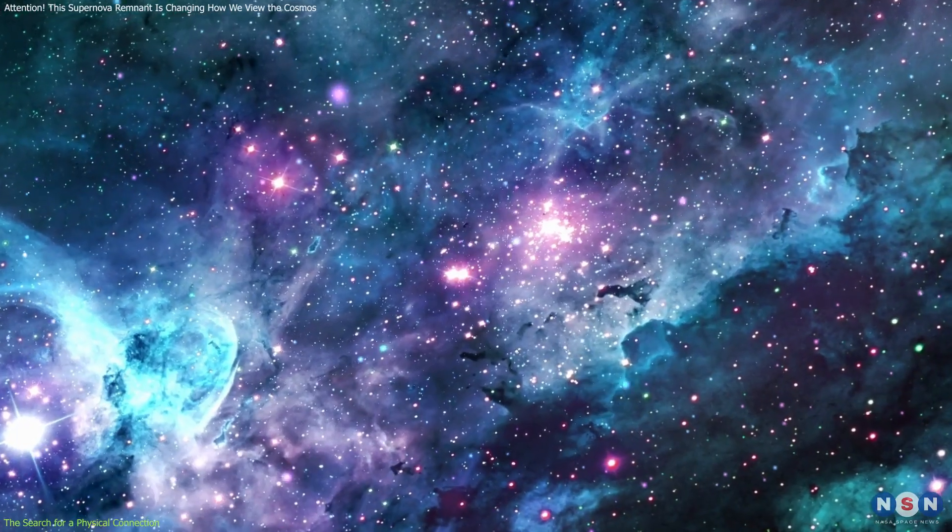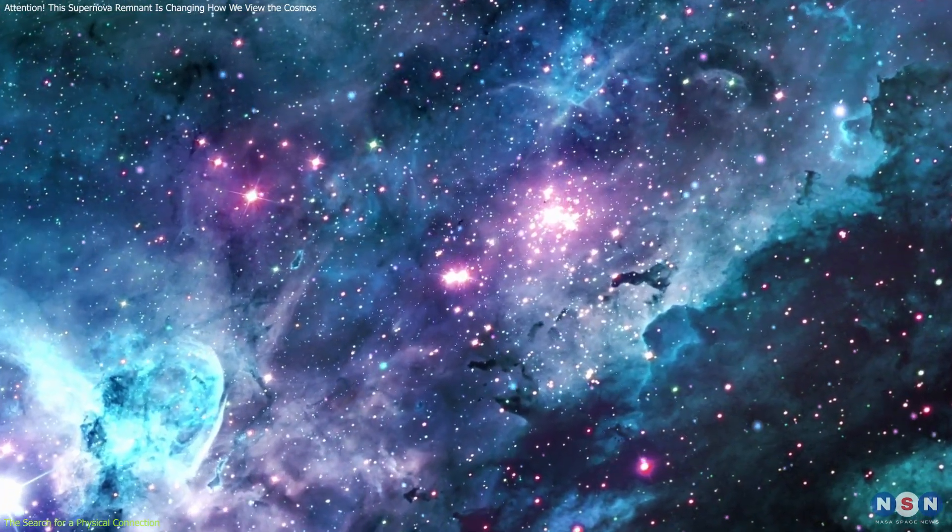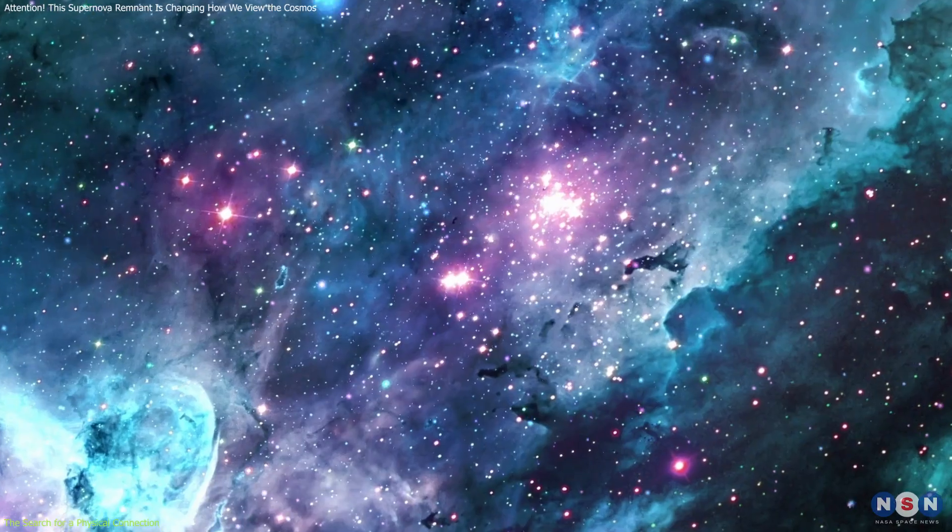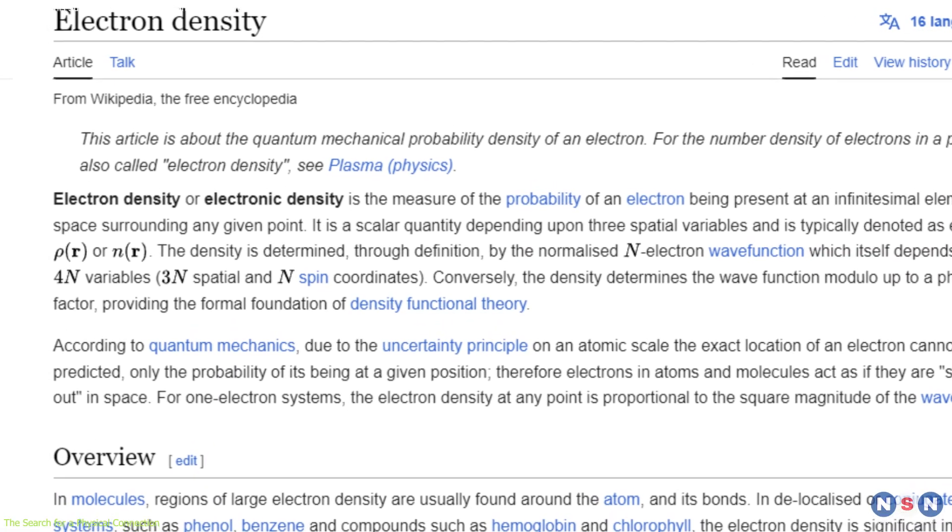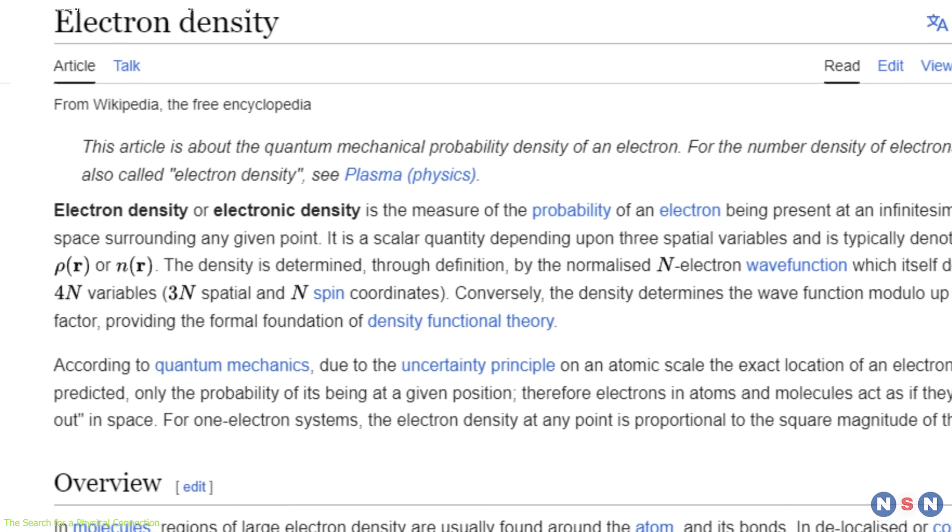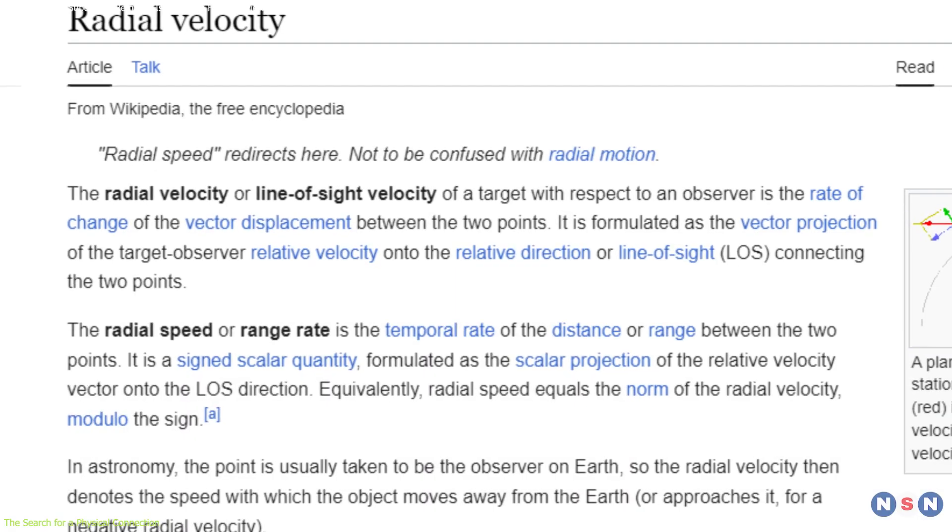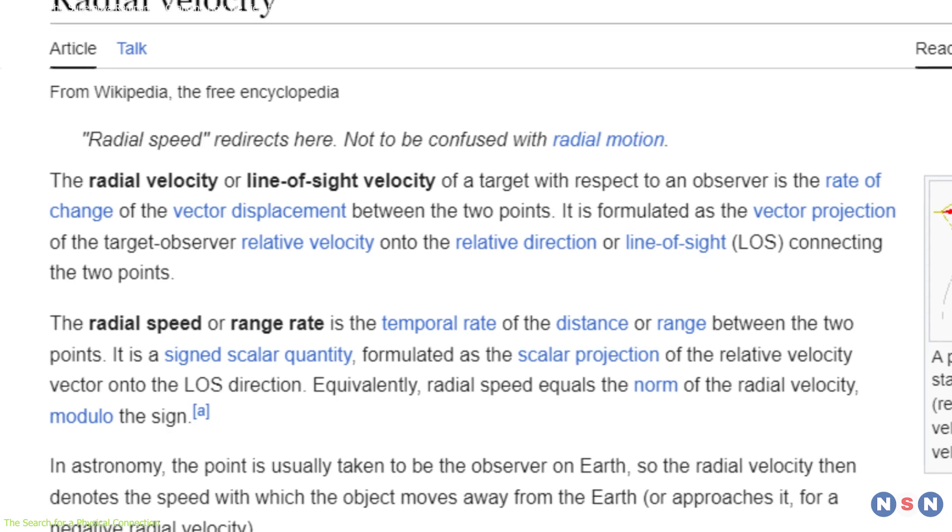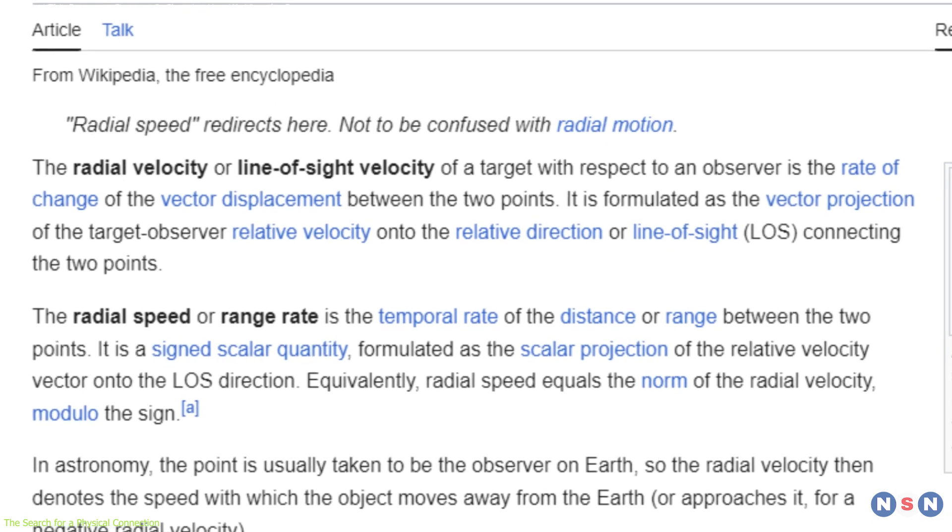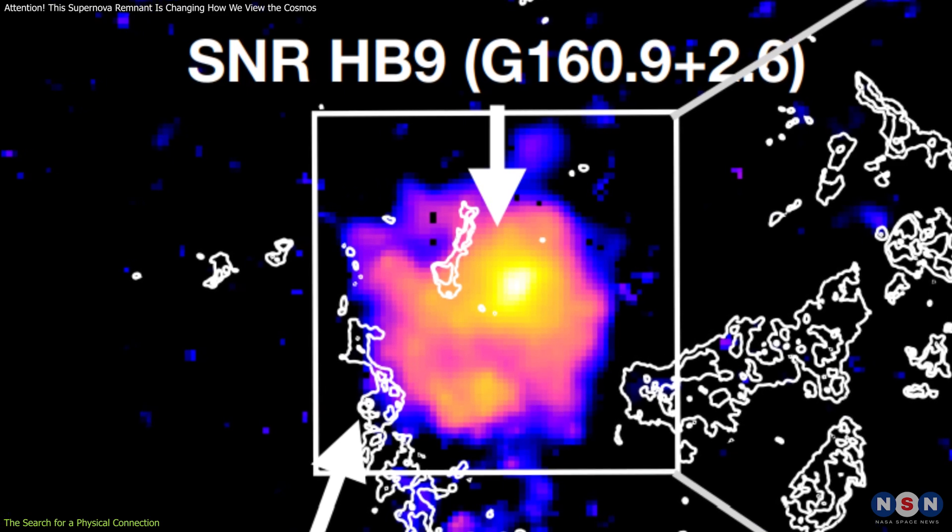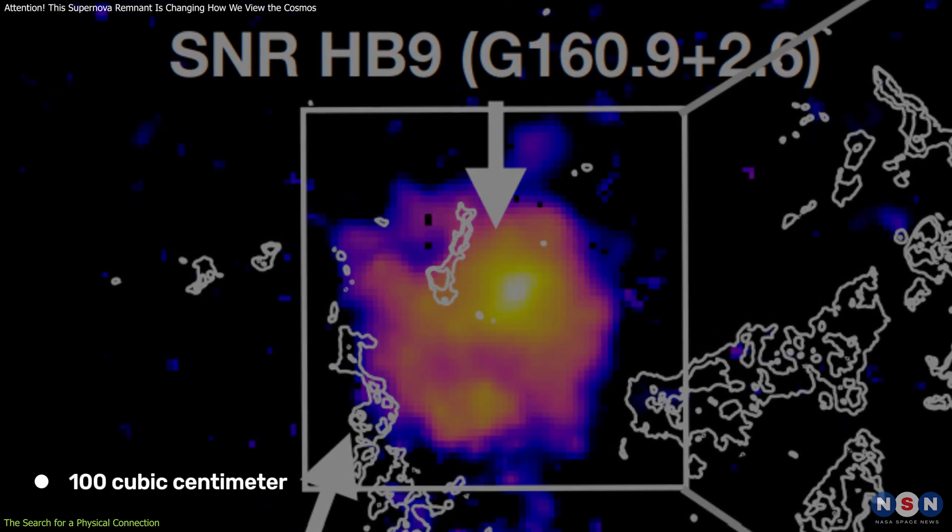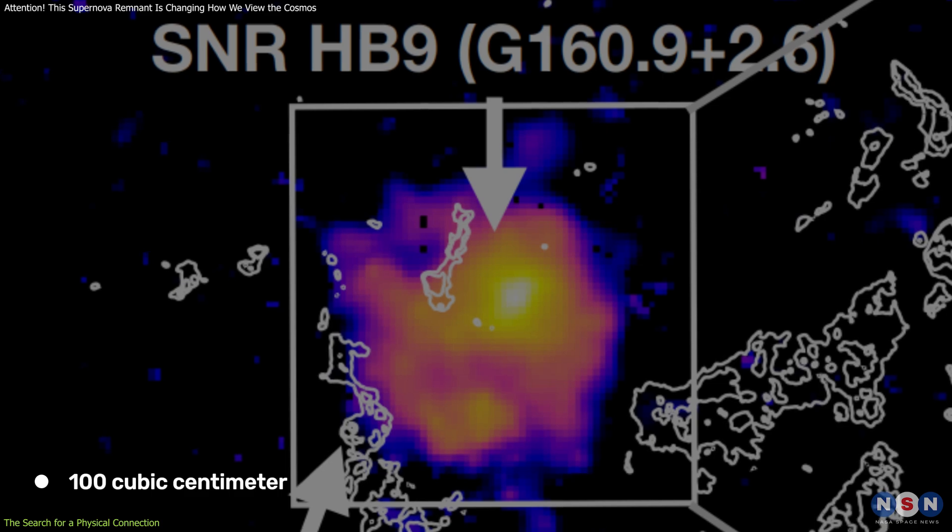The key to unraveling the mystery lay in the measurements of electron density and radial velocity. Electron density gives astronomers a sense of how much matter is packed into a given volume of space, while radial velocity measures how fast an object is moving toward or away from us. In the case of Hb9, the researchers measured a median electron density of about 100 cubic centimeters for the southeast shell of the remnant.